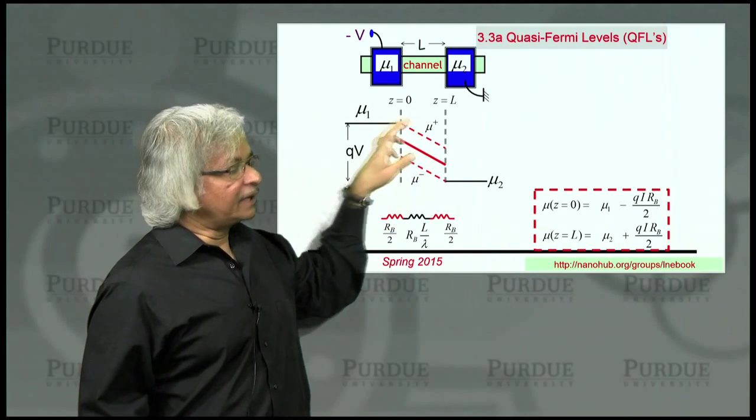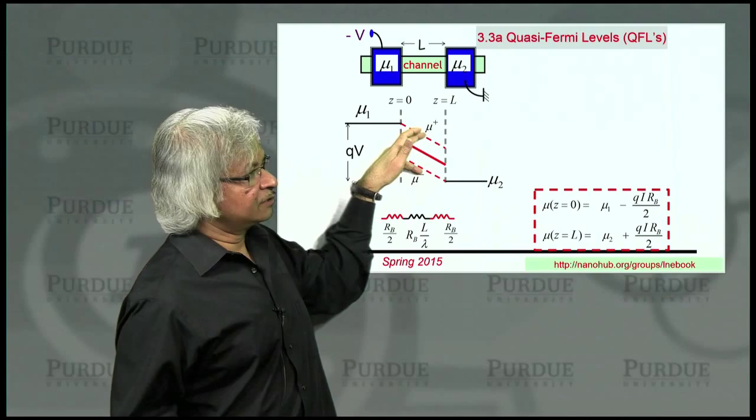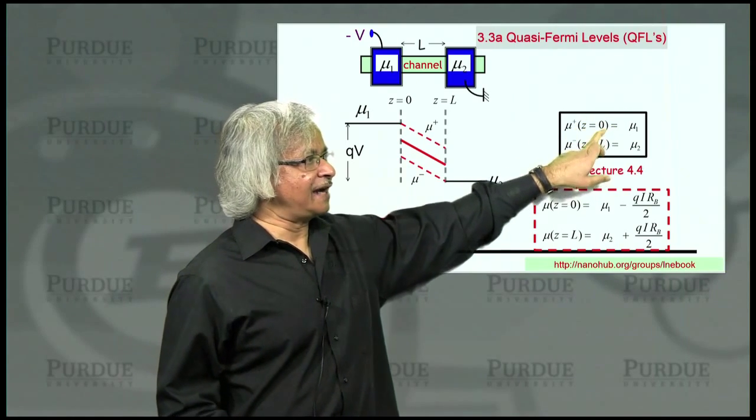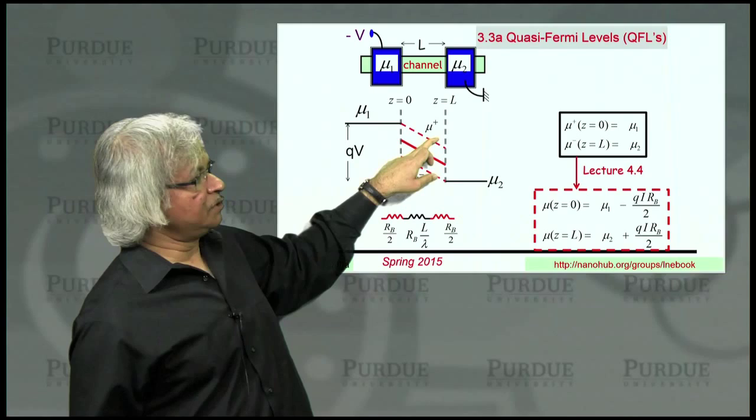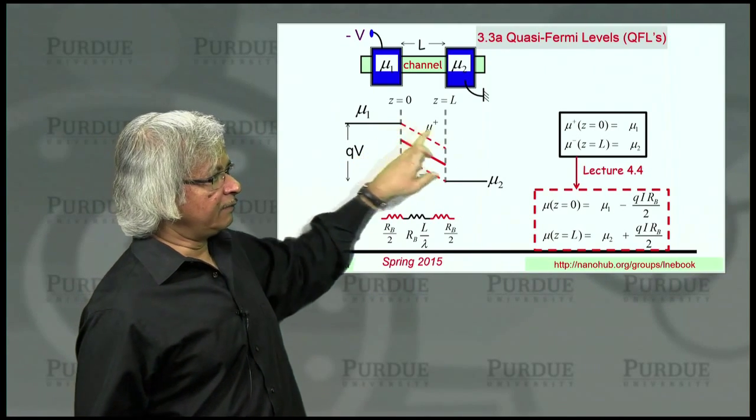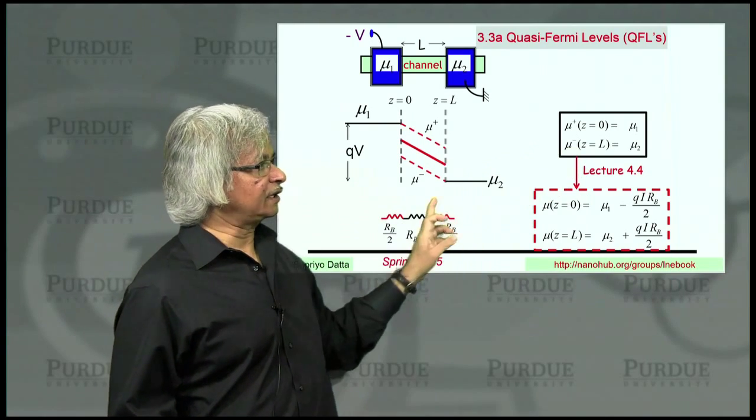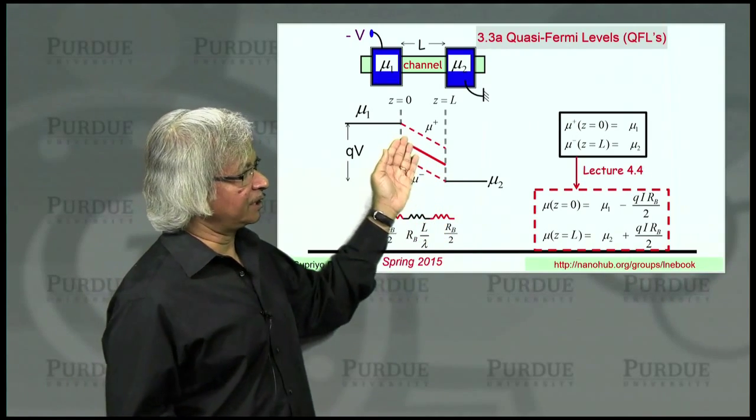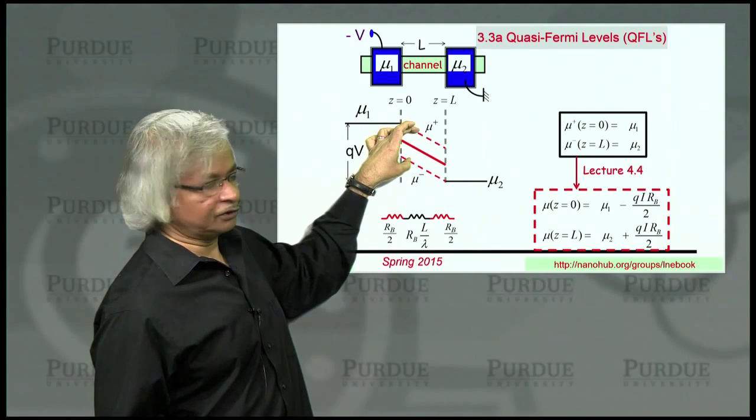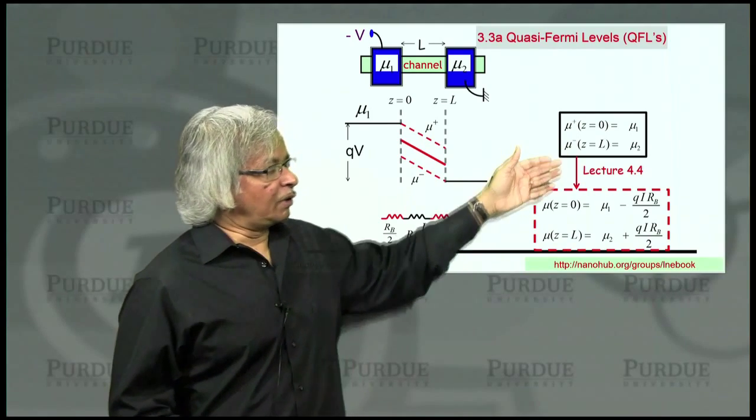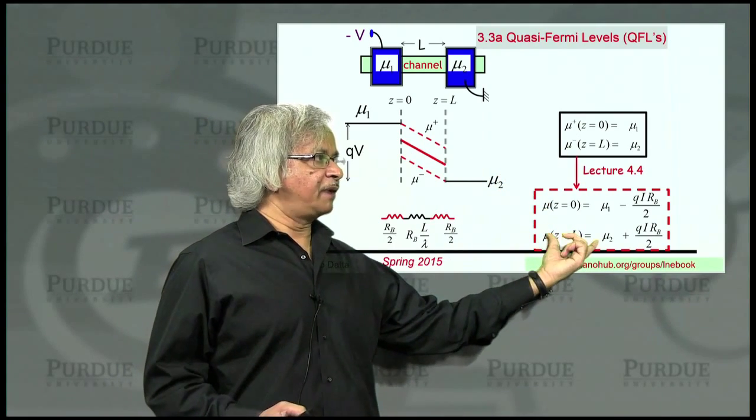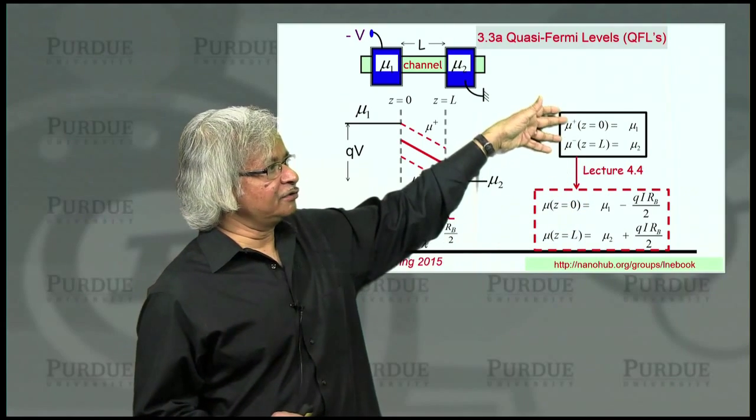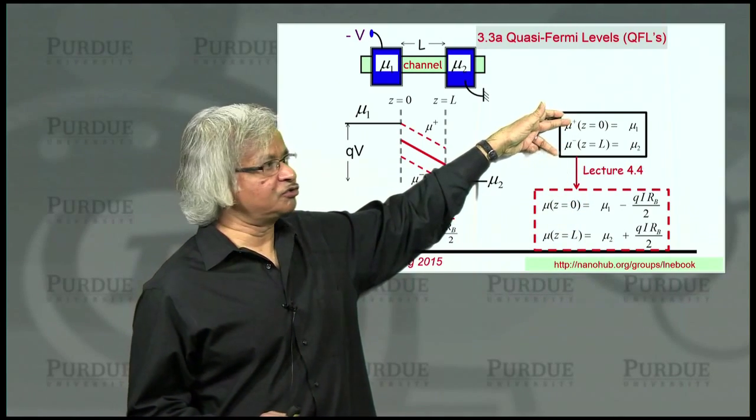We'll show that the correct boundary conditions for these quasi-Fermi levels is that mu plus, the one for right-moving carriers at z equals 0, is mu 1. Mu plus has to connect up to mu 1 here, whereas mu minus connects up to mu 2 at this end. What we usually call mu, the electrochemical potential, is actually the average of the two.